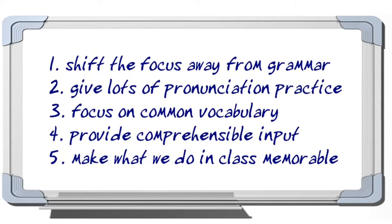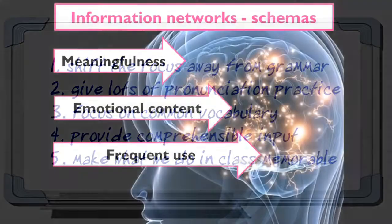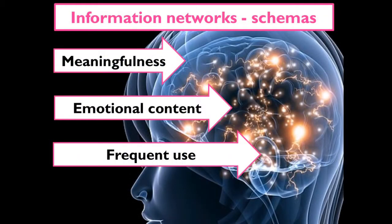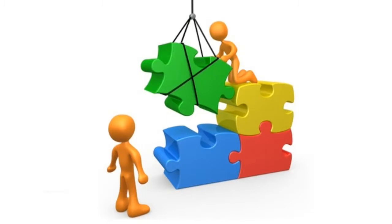Now let's look at that last point: making whatever we do in class memorable. As I've already said, we remember things when they are meaningful, when they spark emotions, or when we can link them to our existing information. So how does this translate to effective classroom practice? Well, students will remember more if they're engaged, so we should try and set tasks where they are involved — thinking and doing rather than just being told something, sometimes moving around the classroom and interacting with different students.